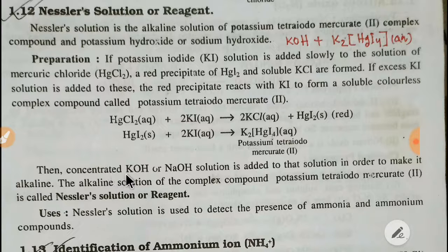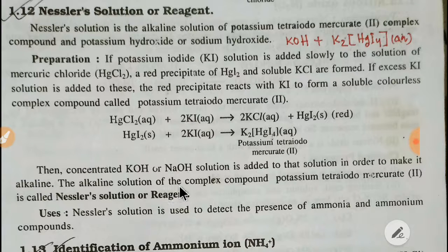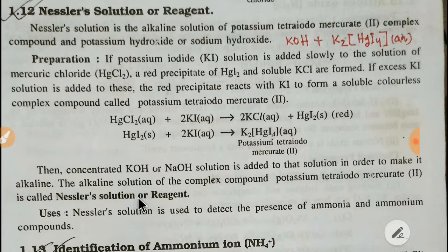After forming this compound, we add potassium hydroxide or sodium hydroxide to the solution to make it alkaline. The alkaline solution of the complex compound potassium tetraiodo mercurate is called Nessler's solution or reagent.